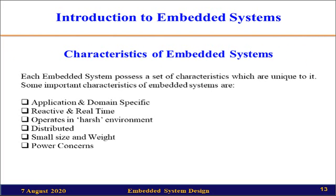Next, we have the characteristics of embedded systems. The first characteristic is that they are application and domain specific. As discussed in the second lecture, general computing systems can do a variety of tasks, but embedded systems are very specific — they perform only specific functions. So we can say they are application-specific and related to a specific domain.